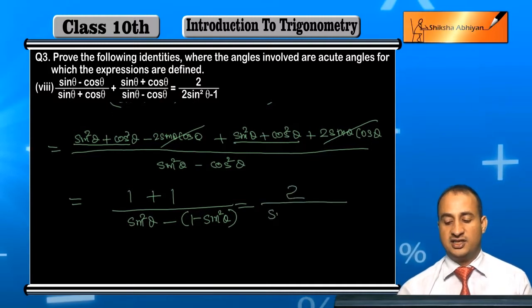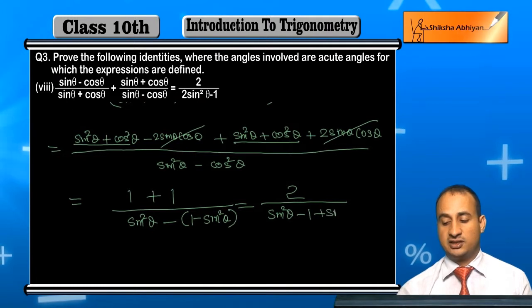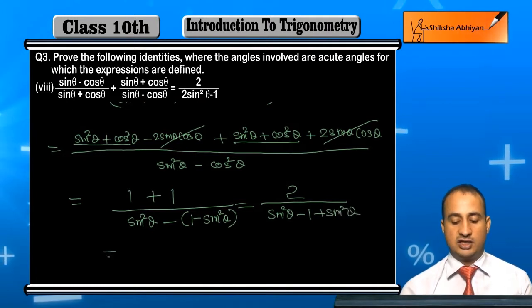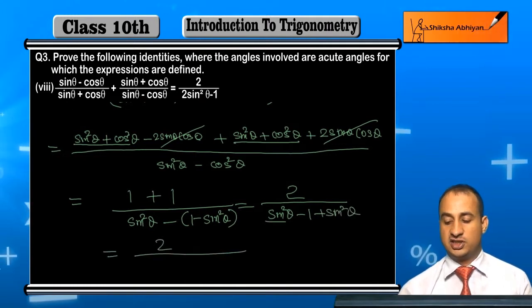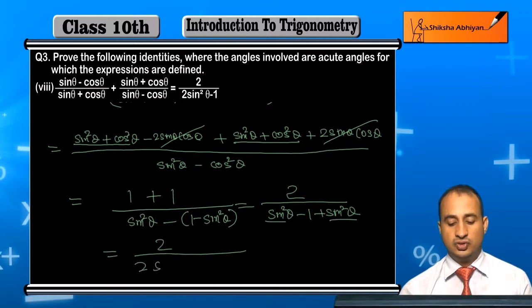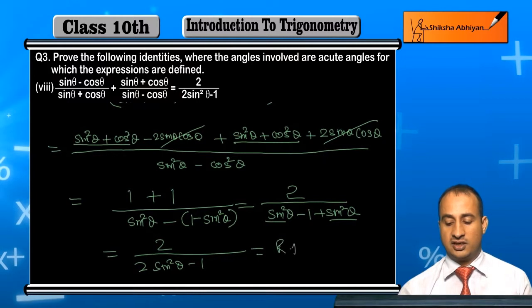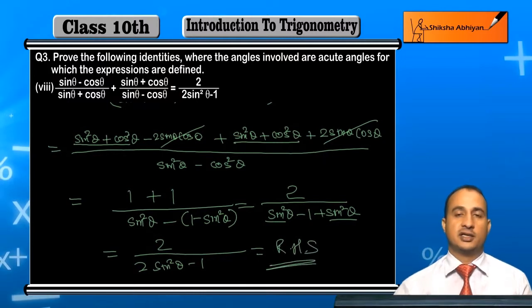So on top, what came? 2 came. Below, sine square theta minus 1, and minus minus becomes plus, so sine square theta. And this will come out as 2 upon sine square theta plus sine square theta, which is 2 sine square theta minus 1, and that is equal to the right hand side, which you had to prove.